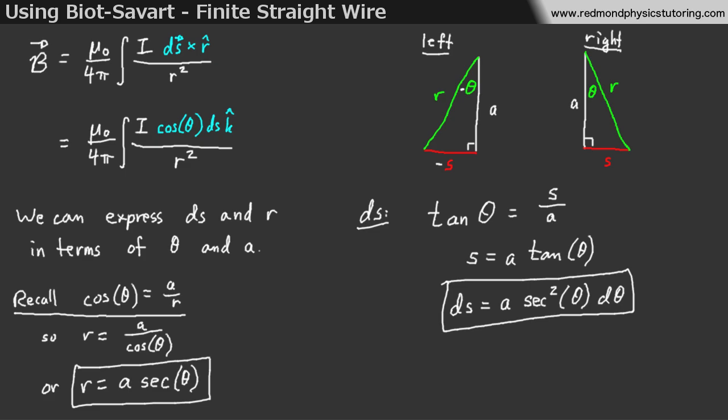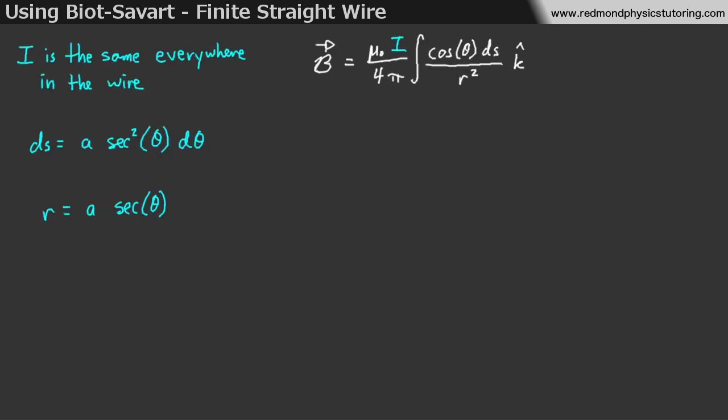So, we're getting closer to where we want to be. Finally, we can substitute these into Biot-Savart. First, I mentioned at the beginning that the current is the same everywhere in this wire, so we can take that out of the integral. Then, we substitute in that dS is a secant squared theta d theta into the top, so we get a nice expression on the top. Then, we can substitute r is equal to a secant theta on the bottom.